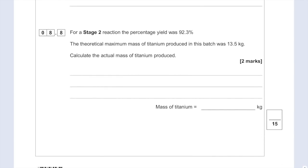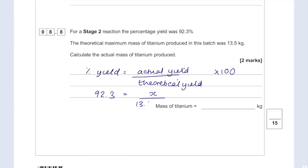For the stage 2 reaction, the percentage yield was 92.3%. The theoretical maximum mass of titanium produced was 13.5 kg. Calculate the actual mass. Percentage yield is actual yield over theoretical yield times 100. So 92.3 = x/13.5 × 100. Divide both sides by 100: 0.923 = x/13.5. Times both sides by 13.5: x = 12.5 kg.